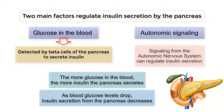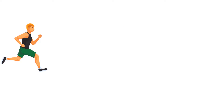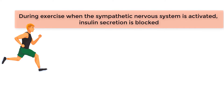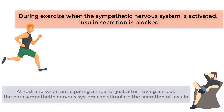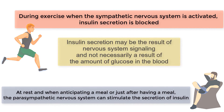Additionally, signaling from the autonomic nervous system can regulate insulin secretion. During exercise, when the sympathetic nervous system is activated, insulin secretion is blocked. At rest, and when anticipating a meal or just after having a meal, the parasympathetic nervous system can stimulate the secretion of insulin. Therefore, insulin secretion may be the result of nervous system signaling and not necessarily a result of the amount of glucose in the blood.